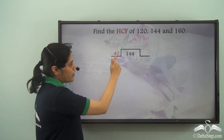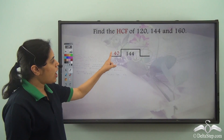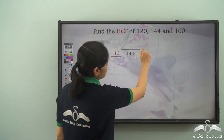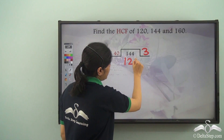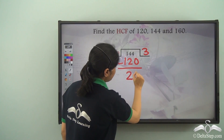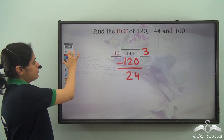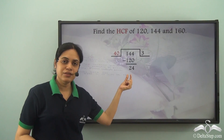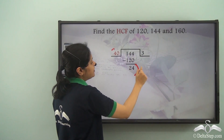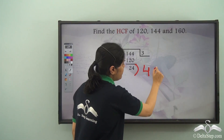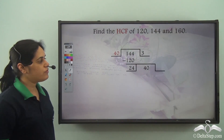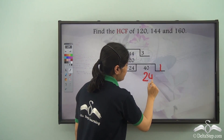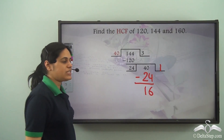So 144 is divided by 40. How many times does 40 go into 144? Three times. 40 into 3 is 120, and I subtract it to get the remainder 24. Now this 24 is the remainder, so it will divide the divisor of the last step. 24 goes into 40 one time, and I get the remainder 16.